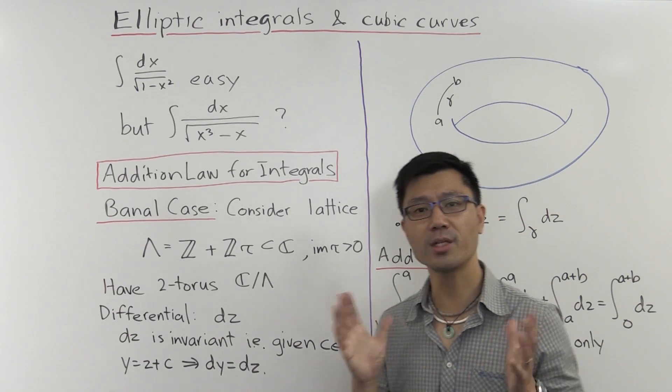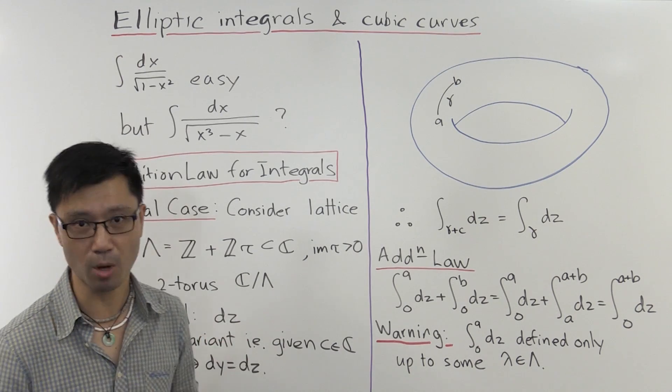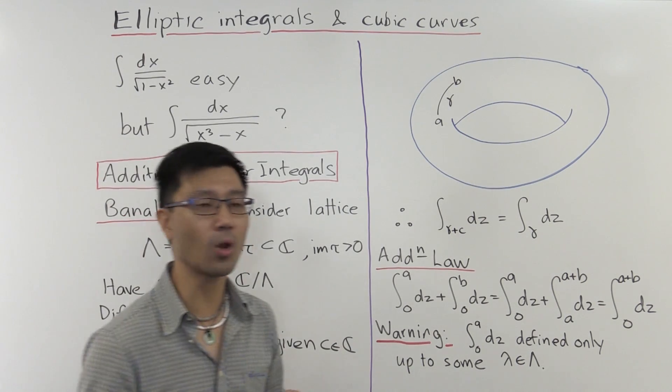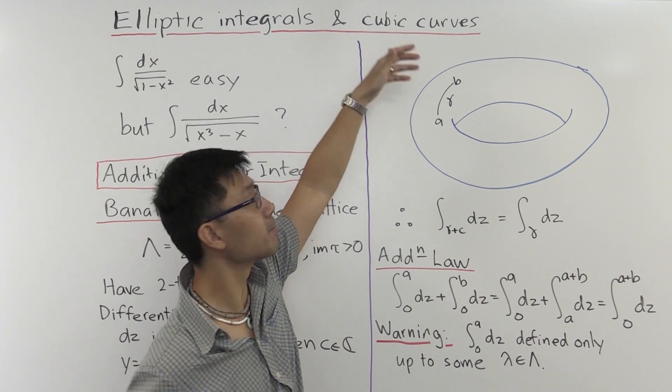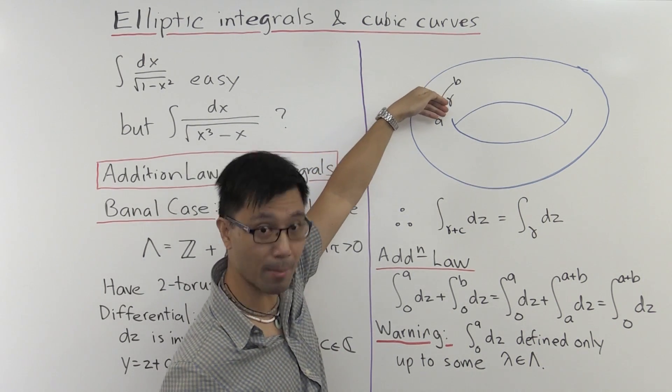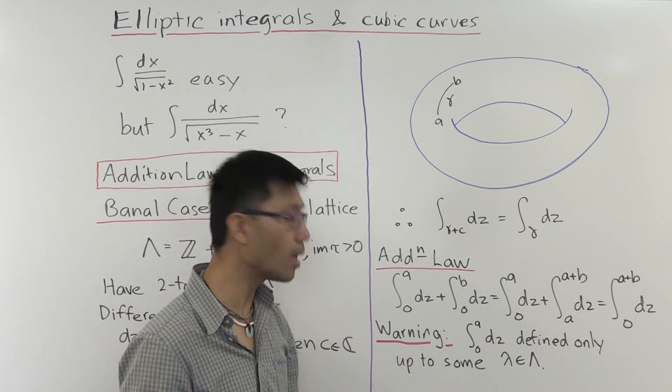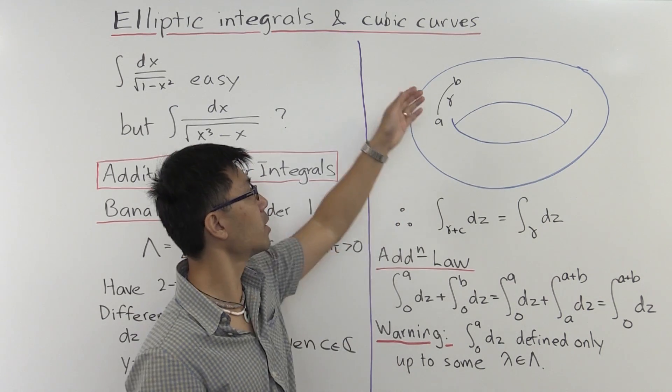OK, great. But what does that buy for us? What can we do with this extra invariance property? Well, it's the following. Suppose we want to integrate this dz, this differential, along some curve γ which goes from a to b on the torus. What can we do? Well, we can certainly do that. And we get something like the integral over γ of dz.